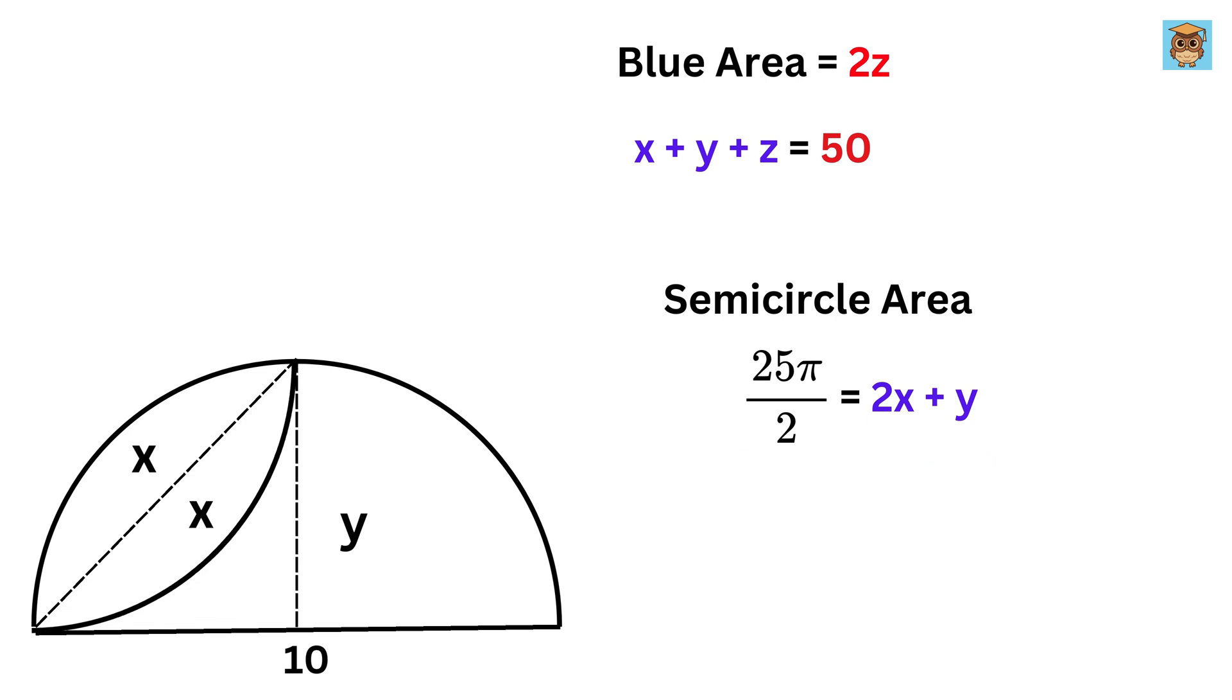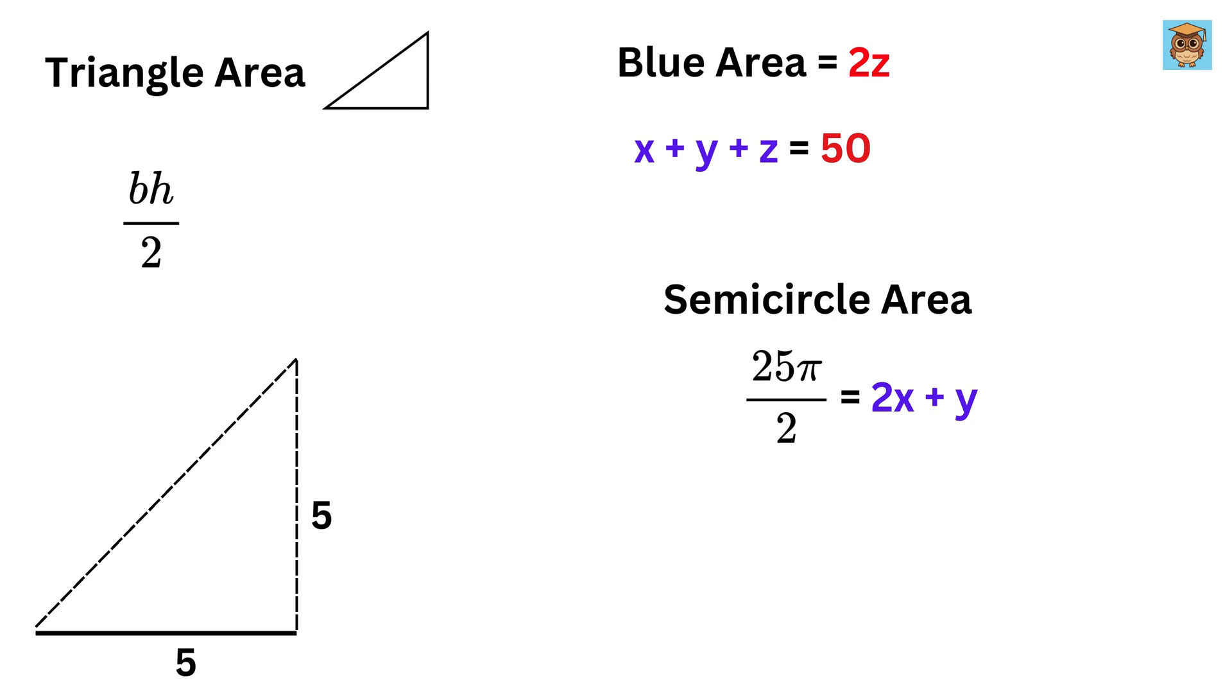Now, let's focus on a triangle inside this semicircle, which is obtained by dividing the semicircle in half. The height of this semicircle is the same as its radius, which is 5. The area of a triangle is given by base times height, divided by 2.